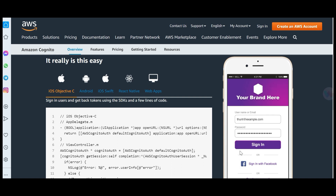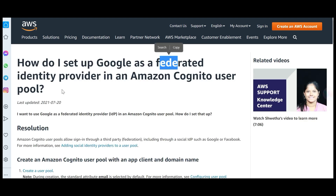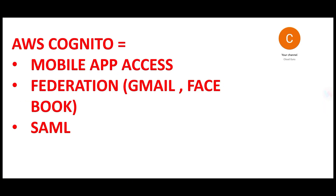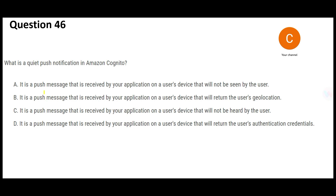You can also set up a federated identity provider like Gmail, Yahoo, or Facebook, because many applications let you log in with your existing ID without creating a special account. As a thumb rule, use Cognito when you are putting your application on mobile — accessed through mobile apps like Uber, amazon.com, or Flipkart — and you can use federation like Gmail IDs or Facebook usernames. It uses the SAML protocol.